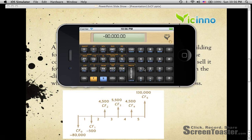And then the next step is CF1 is negative $500, and then save by pressing G and CFJ.